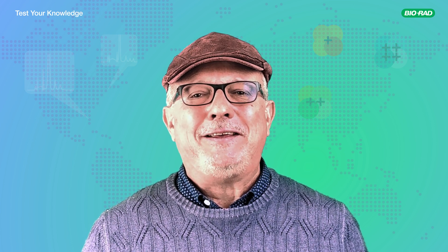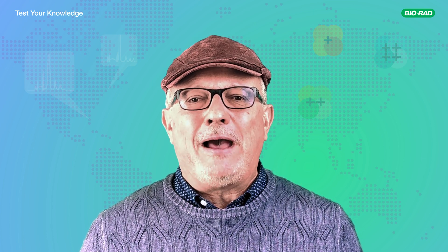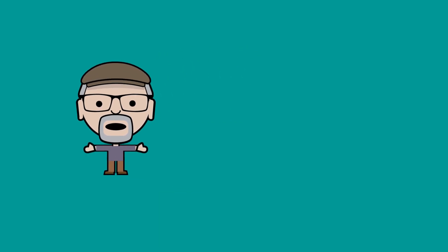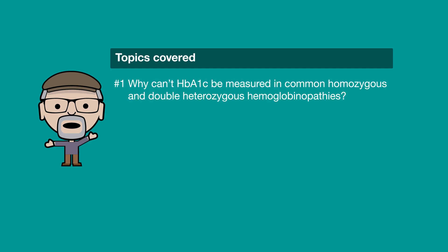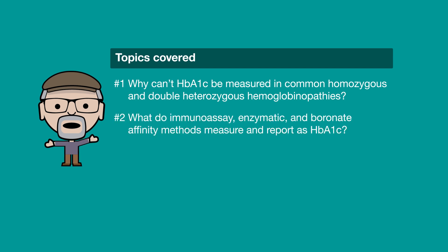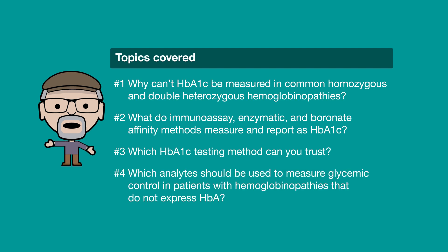Hi, I am Marco Flamini, a hemoglobin testing expert at Bio-Rad Laboratories. Today we will present answers to the following questions: Why can't A1c be measured in common homozygous and double heterozygous hemoglobinopathies? What do immunoassay, enzymatic, and boronate affinity methods measure and report as HbA1c? Which HbA1c testing method can you trust? Which analytes should be used to measure glycemic control in patients with hemoglobinopathies that do not express hemoglobin A?